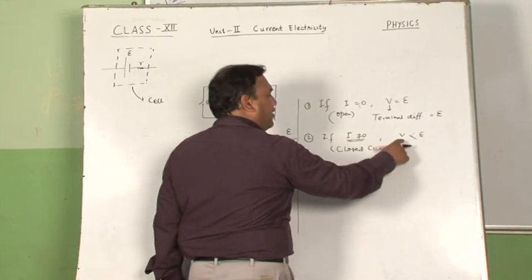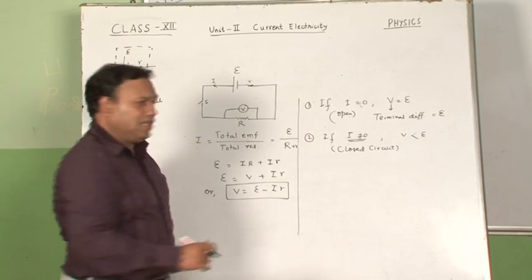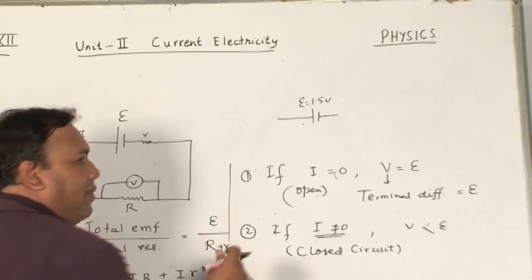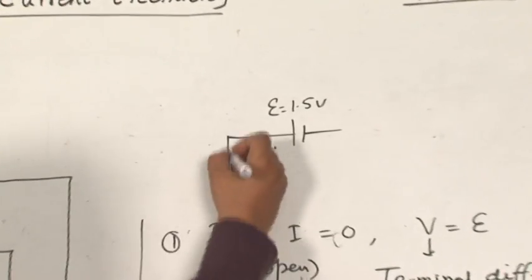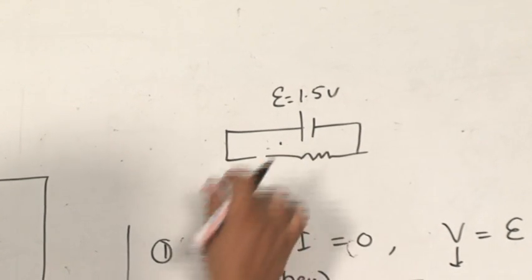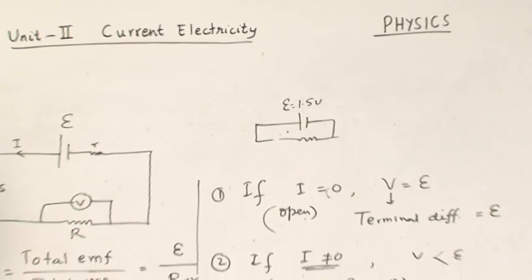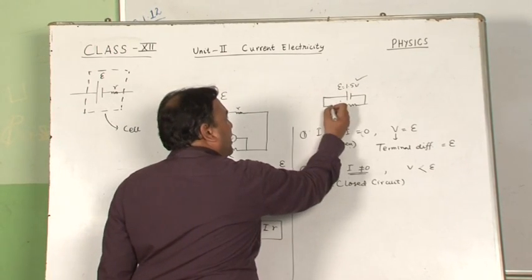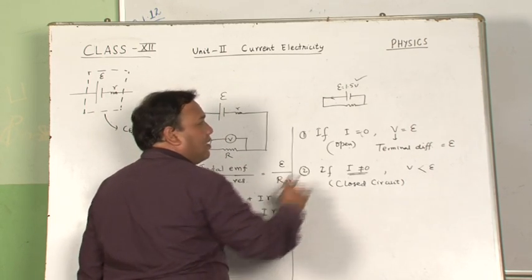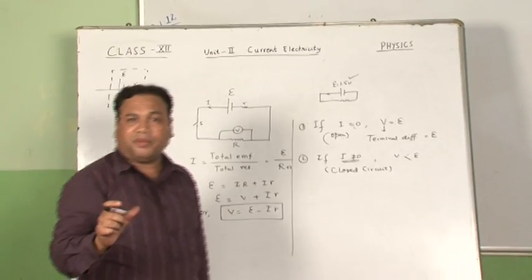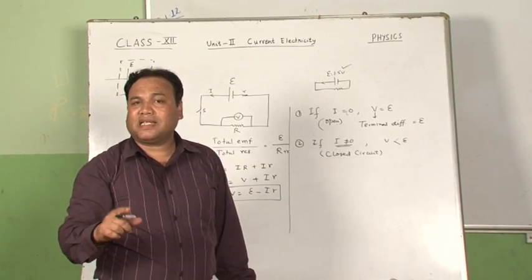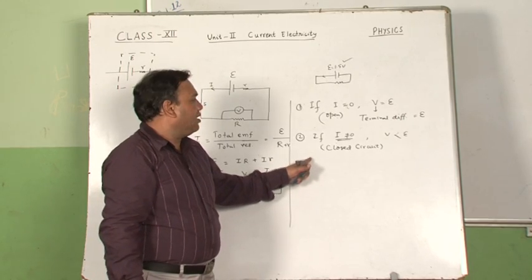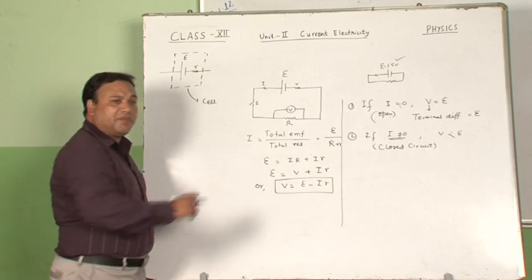The significance of these two: when no current is drawn from the cell, V equals E — the terminal potential difference across the cell equals its EMF. But when current is drawn, this terminal potential difference gets reduced. For example, if I take a cell whose EMF is 1.5 volt and I'm not drawing any current, the voltmeter reads 1.5 volts. When the circuit is completed and current flows, the potential difference across the battery terminals is less than 1.5 volt — it may be 1.3 or 1.2.